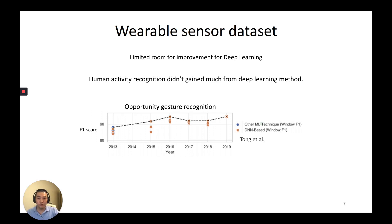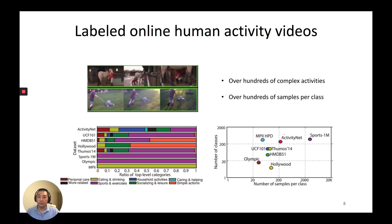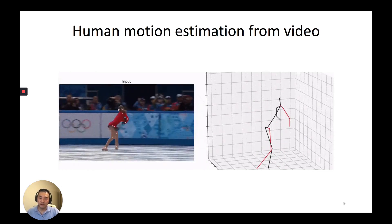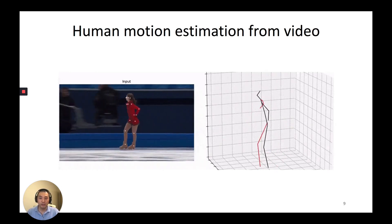Now that we've looked at the limitations in wearable datasets, let's see activity datasets in other communities. In the computer vision community, they have massive labeled online human activity videos. Activity classes go up to hundreds and thousands, from everyday activity to sports, and each activity class has hundreds and thousands of video samples as well. Recent advances in computer vision technology also enable motion tracking from video datasets.